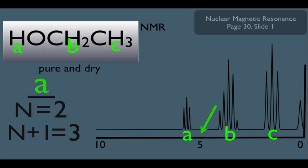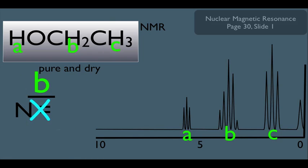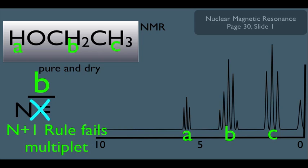Now, let's do our splitting analysis for the B-type hydrogen. What is his N-value? Notice the B-hydrogens have two neighbors, the A-hydrogen and the C-hydrogens. And remember, since these are not chemically equivalent, the N-plus-1 rule will fail for the B-hydrogens, so we should expect to see him as a multiplet. And sure enough, that's what we got right here.